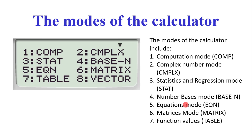Then the function values or table mode. This particular function enables you to create a set of ordered pairs using a particular function or relation. Under relations and functions you can use this mode to generate your set of ordered pairs. We shall also be looking at that in our future videos.